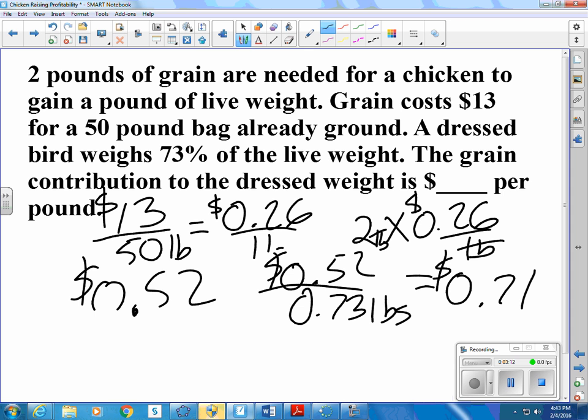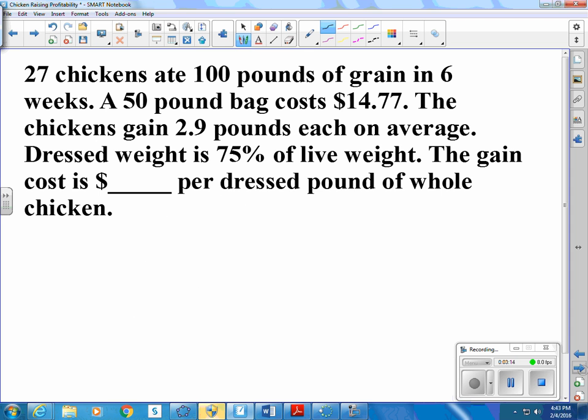That means the chicken has been cleaned already. Still has the bones in it. Well, here's another one. 27 chickens ate 100 pounds of grain in 6 weeks. A 50 pound bag costs $14.77. Chickens gain 2.9 pounds each on average. Dressed weight is 75% of live weight. The gain cost is what per dressed pound of whole chicken.